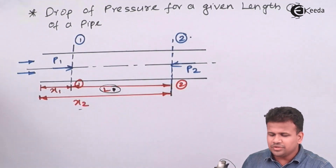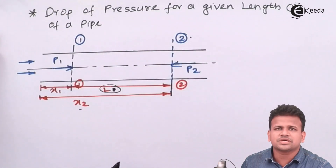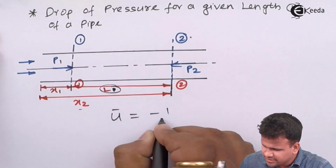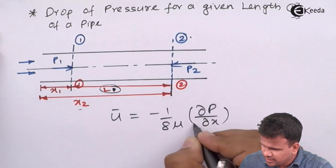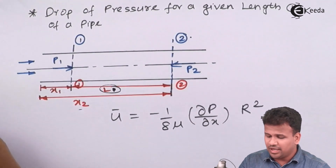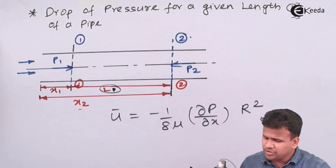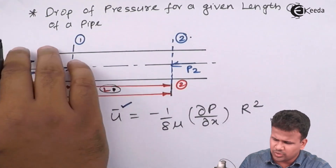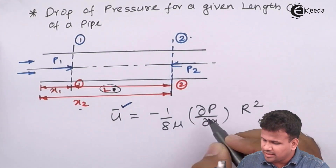The fluid is flowing from section 1-1 to section 2-2. The average velocity ū is minus 1 upon 8μ times (∂p/∂x) times r². That is the average velocity over the entire pipe section. Now, we have calculated the average velocity; we are going to keep the value of average velocity constant over the entire flow of the pipe, and we are going to vary the length.